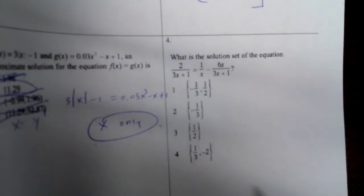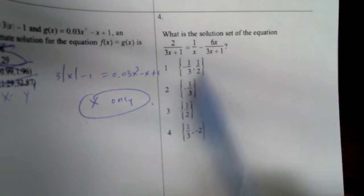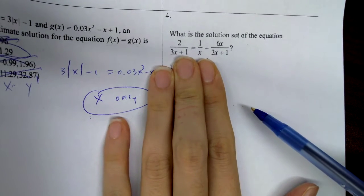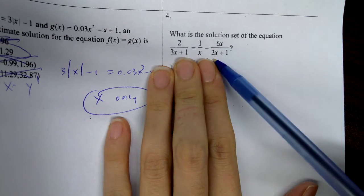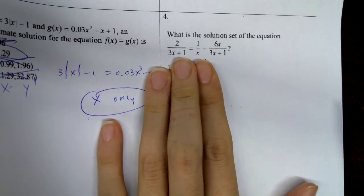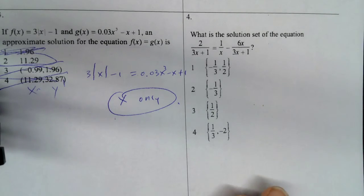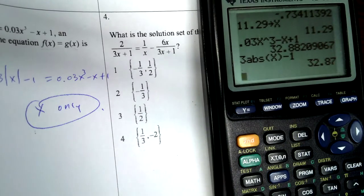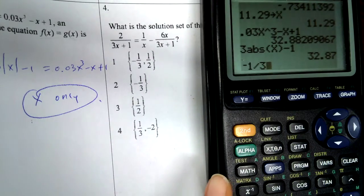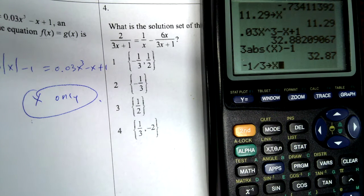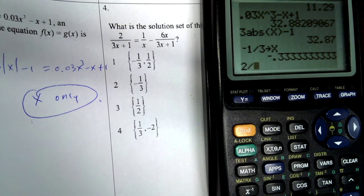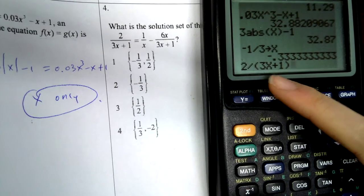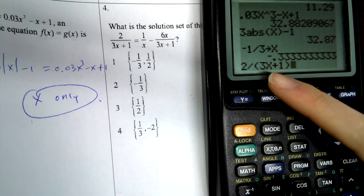Alright, number 4. What is the solution set of the equation? Okay, yes, if this was an open response, you would go ahead and find the LCD. Multiply everything by LCD and then solve the quadratic. However, they give us answer choices. So we're going to go ahead and actually plug and chug. So this is why I'm telling you, you need to get yourself a nice graphing calculator. So I'm going to go ahead and do negative 1 over 3 store x. And I'm going to start typing the left side of the equation.